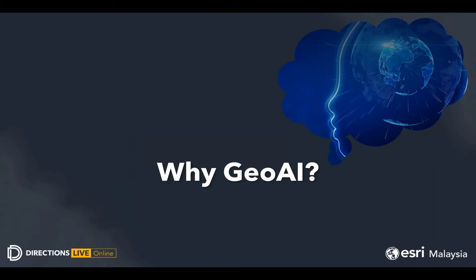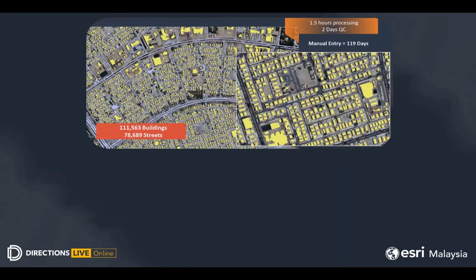So why GeoAI? What attracts people to learn about GeoAI is the kinds of results it produces. For example, the Kuwait Public Authority of Civil Information extracted building footprints and streets automatically. Previously this required 119 days of manual data entry jobs to digitize these polygons. Now they can do all of this using GeoAI within one and a half hours of processing and two days of QC jobs — that is 60 times faster than the conventional approach.